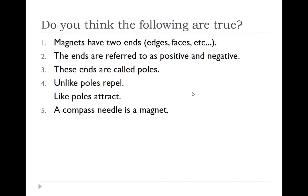So, in this particular part of this unit, we're going to answer the following questions. Do you think these are true? Magnets have two ends, or edges, or faces, or whatever word you want there. These ends are referred to as positive and negative, or these ends are called poles. Unlike poles repel, like poles attract. And a compass needle is a magnet.